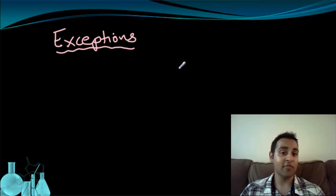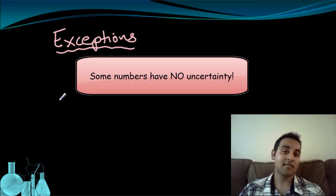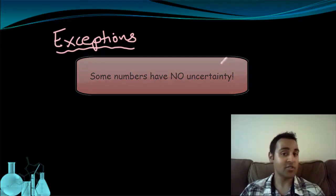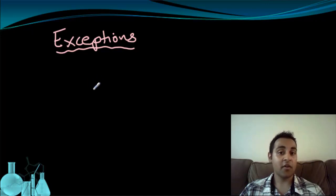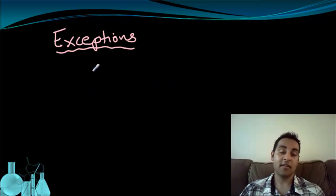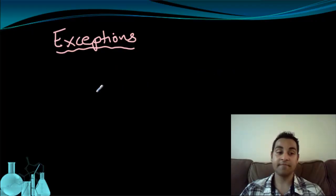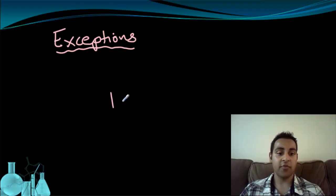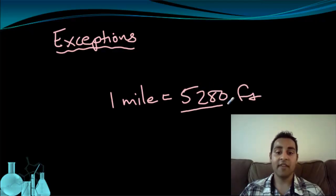Now let's look at some exceptions to when significant figures are not relevant. There's really just one category: some numbers do not have any uncertainty attached to them whatsoever. The most common example is counting. If I open a carton of eggs and count 12 of them, there are exactly 12 eggs — there's no uncertainty. So you don't apply significant figures to things you count; you can consider them as having infinite significant figures. Another exception is conversion factors, like in dimensional analysis. For example, 1 mile equals 5,280 feet — this 5,280 is exact and is not treated as having only four significant figures for any calculation.